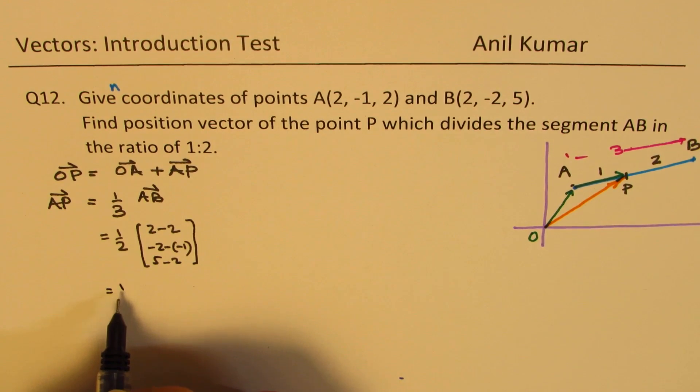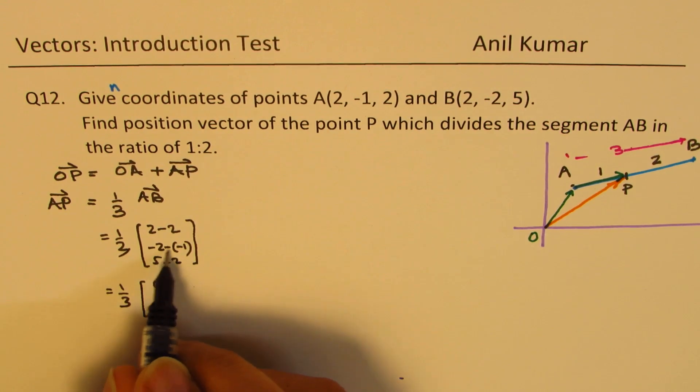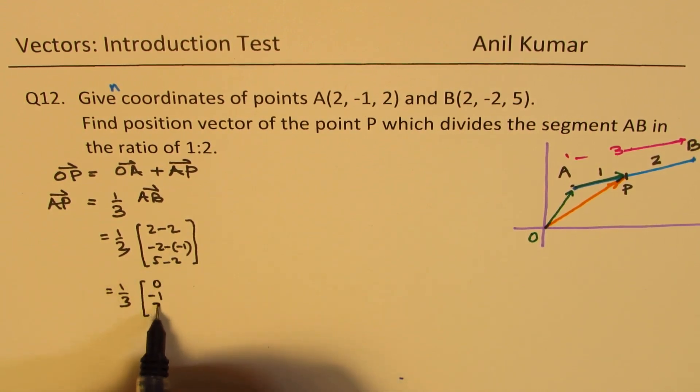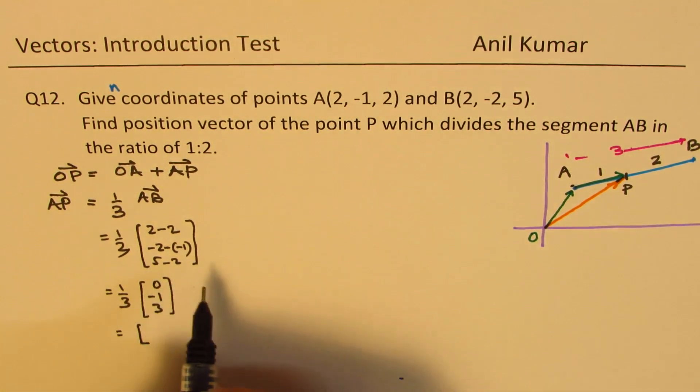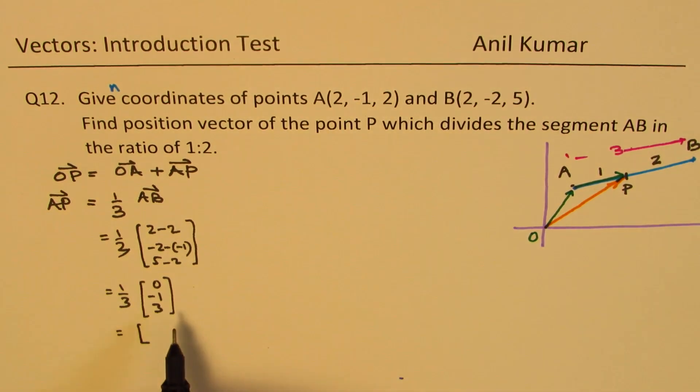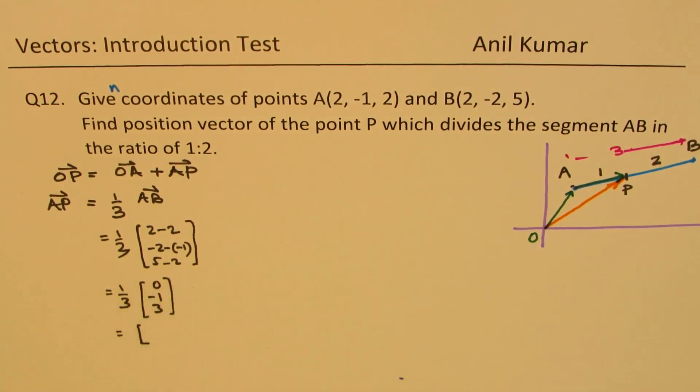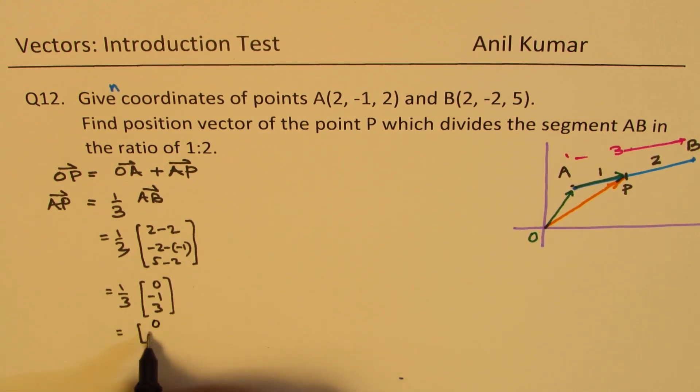That gives you one-third of (2 minus 2 is 0, that is -1 and this is 3). You could write in this form also. AP is 0, minus 1 over 3, and 1. Now we have AP.